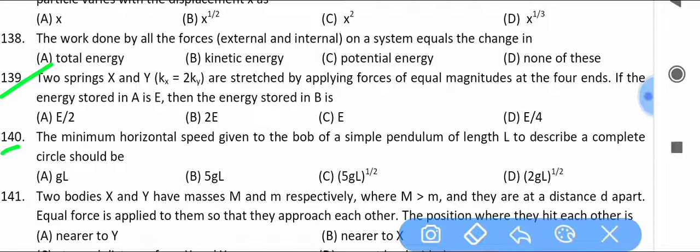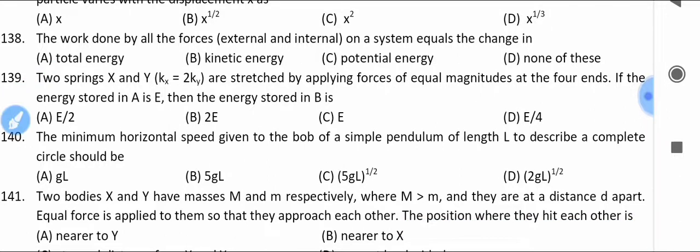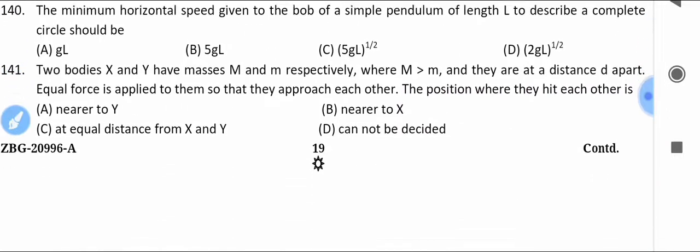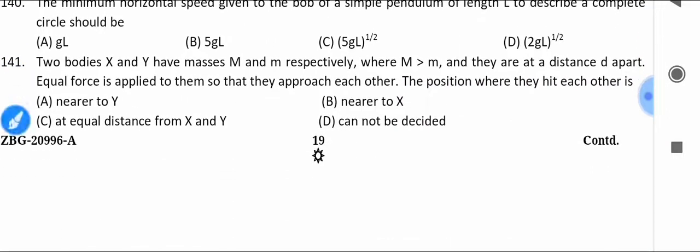Find the minimum horizontal speed given to the bob of a simple pendulum of length l to describe a complete circle.